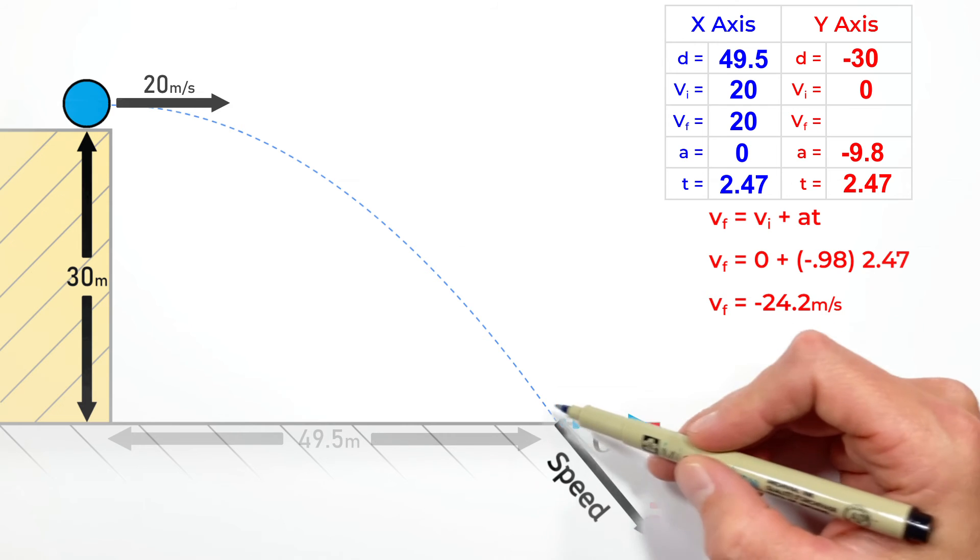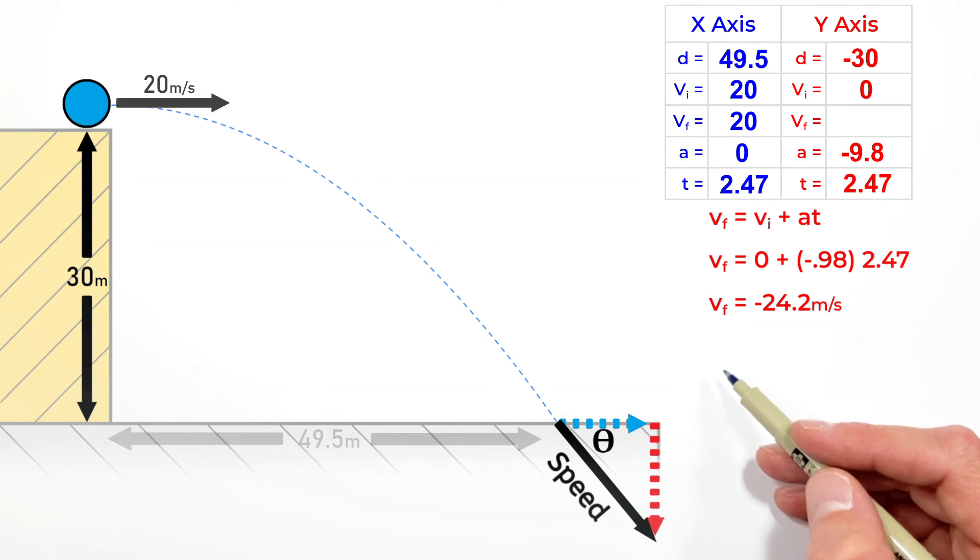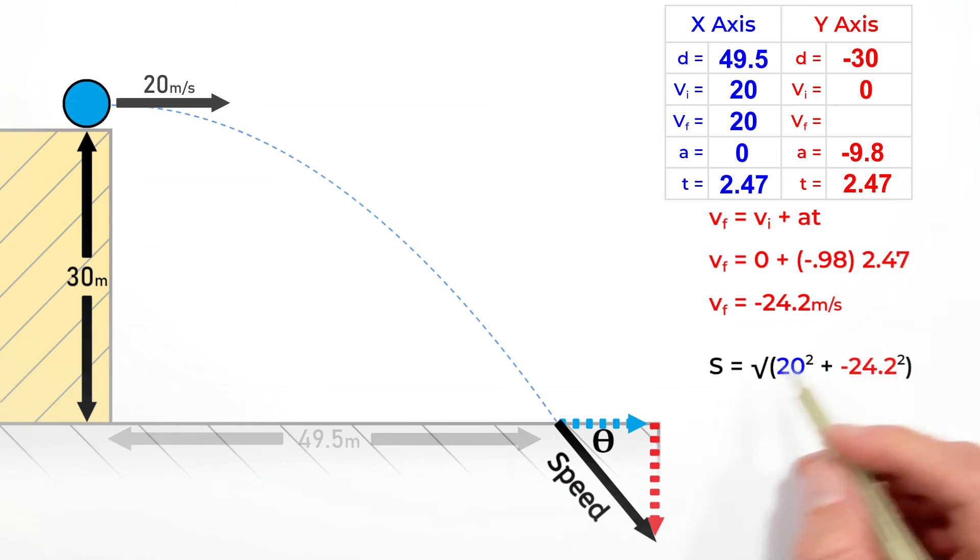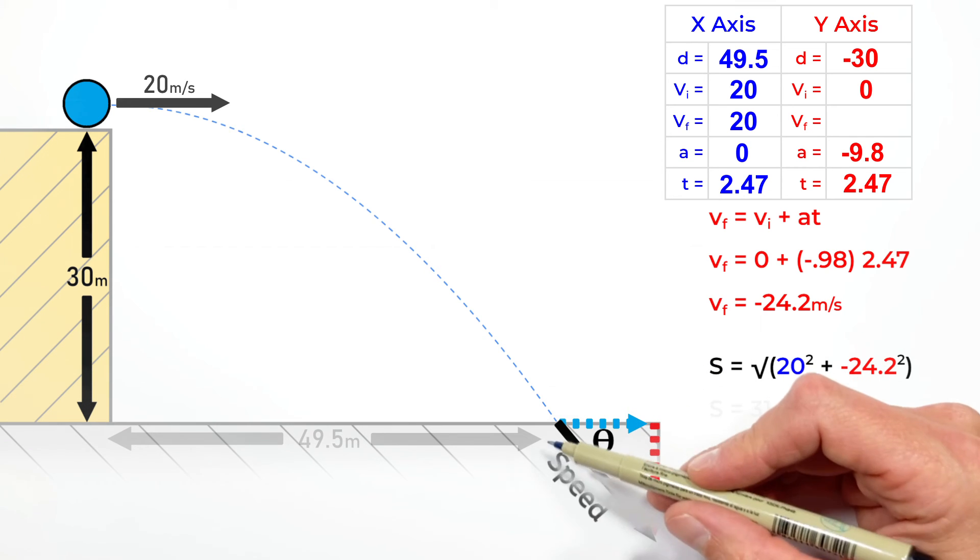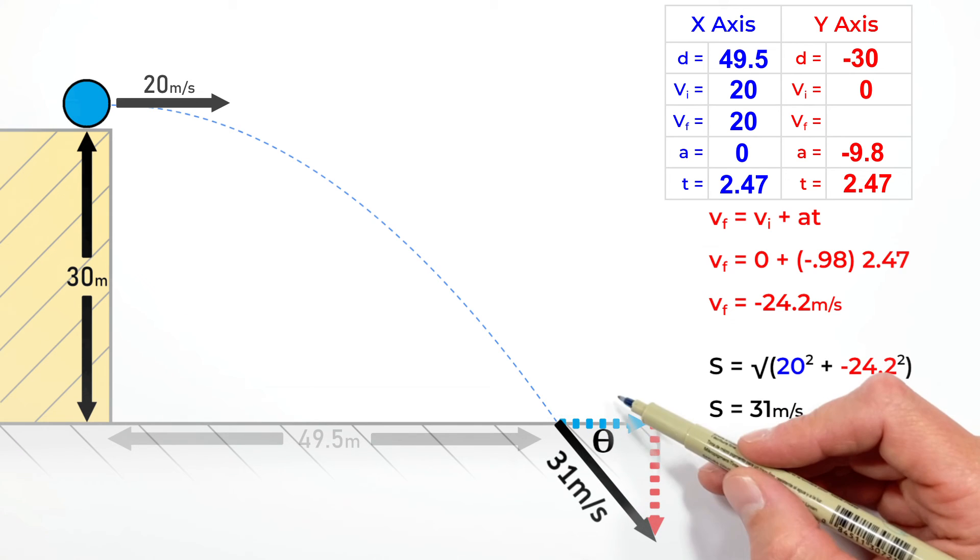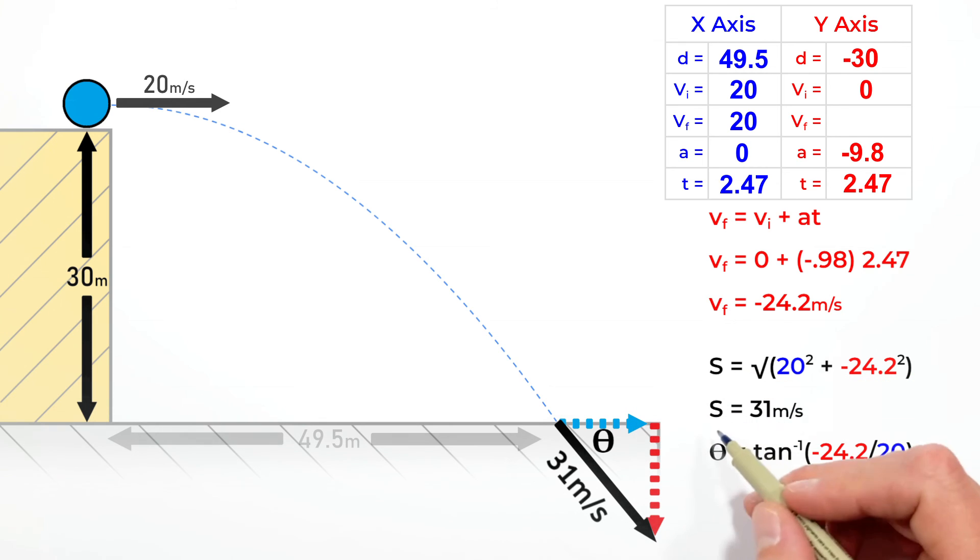We now know both the horizontal and vertical components of our final speed. Looking at this as a right triangle and combining these components, we can plug these values into the Pythagorean theorem and find the final speed of the ball is 31 meters per second. To solve for the angle, we know both the opposite and adjacent sides of this right triangle.